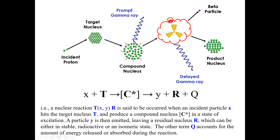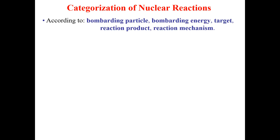The term Q accounts for the amount of energy observed during the reaction. This is a sketch of how nuclear reactions occur and how we can represent them. After a nuclear reaction occurs, the necessary process is to characterize it. Characterization of nuclear reactions is done according to the bombarding particles, bombarding energy, target, reaction product, and reaction mechanism.